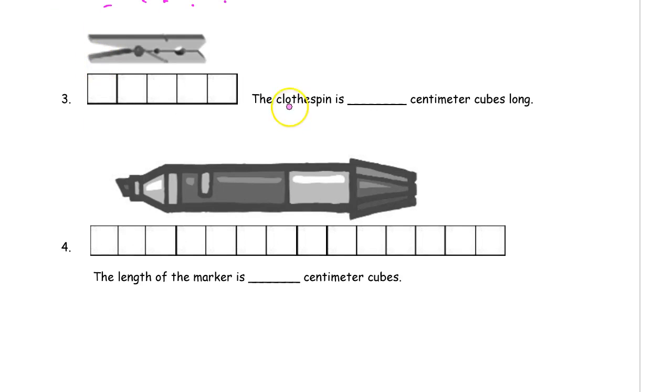Now we have a clothespin, this wooden clothespin. I notice this time it doesn't go all the way to the end, so we're not going to count all the centimeter cubes, we're just going to count the ones that are underneath the clothespin: one, two, three, four. It's four centimeter cubes long.